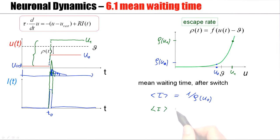So the new τ, the mean waiting time, is 1 over ρ(U₁). Let's call this τ₁. This τ₁ is much shorter than the earlier τ₀.